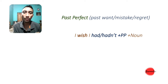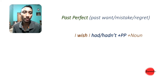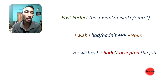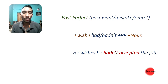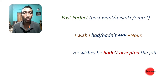Write: subject + wish + subject + had + past participle of verb + noun. If you have a regret about something in the past, you cannot change it now, so you use the past perfect tense. So, it's clear.